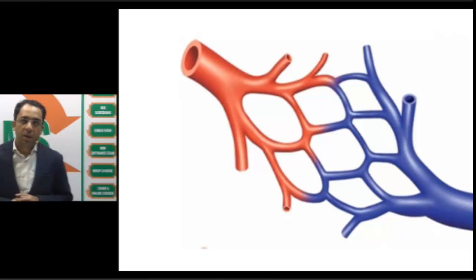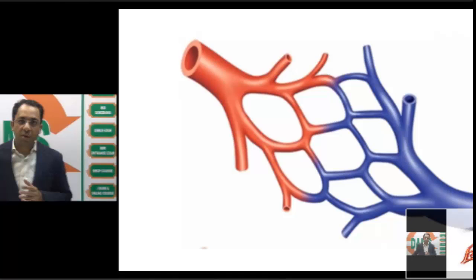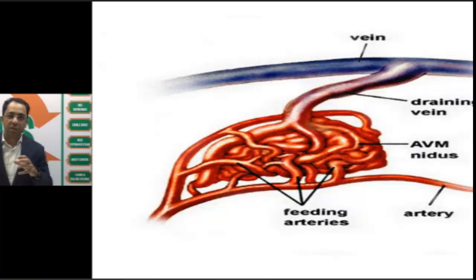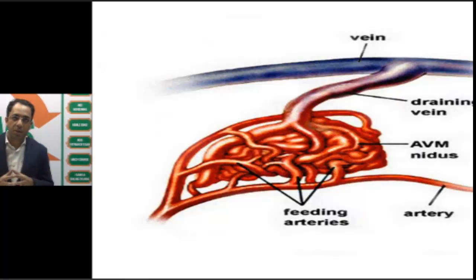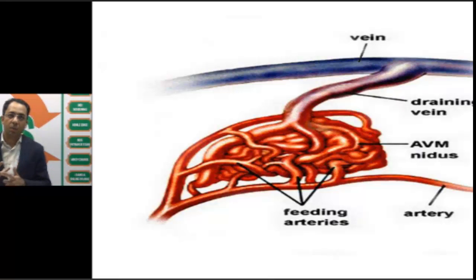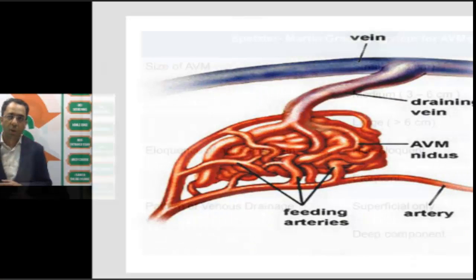In a normal person, the arteries divide into arterioles, capillary network, venules, and veins. In an arteriovenous malformation (AVM), the feeding arteries are connected directly to the nidus, which is the culprit, and that is then directly connected to the draining vein. The draining vein and arterial feeders become dilated due to increased flow, and the patient may have flow-related aneurysms on the arterial side. This can lead to parenchymal hemorrhage, subarachnoid hemorrhage, or intraventricular hemorrhage. The patient may also present with focal neurological deficit or it may be incidental. AVM is a very important cause of brain hemorrhage alongside hypertension, head injury, and aneurysms.